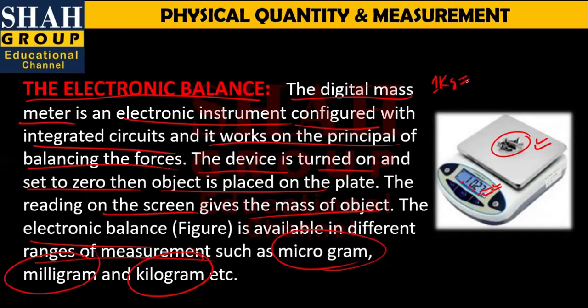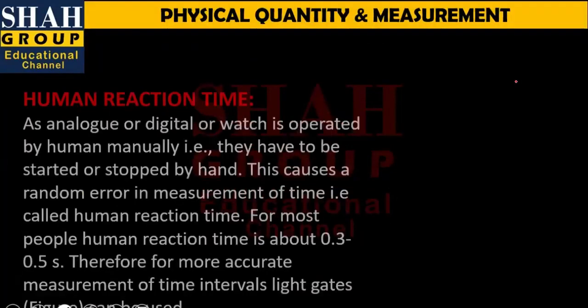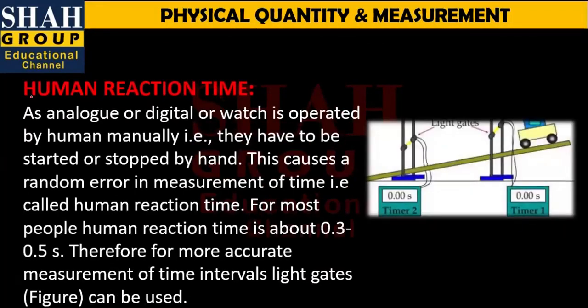Let me give a quick review: one kilogram is equal to 10 to the power 3 grams; one kilogram is equal to 10 to the power 6 milligrams; one kilogram is equal to 10 to the power 9 micrograms — and so on, including nanograms and picograms.